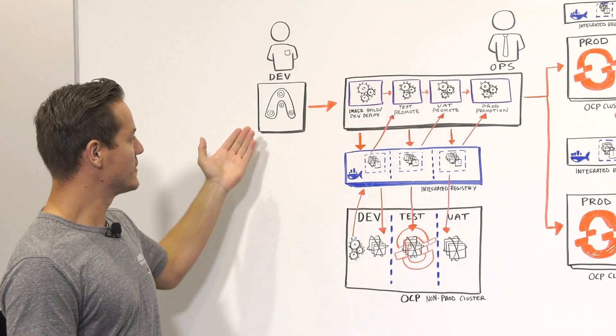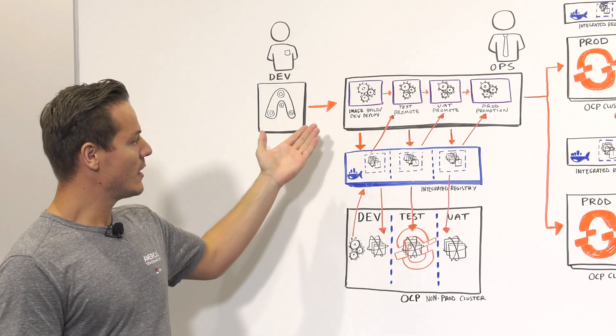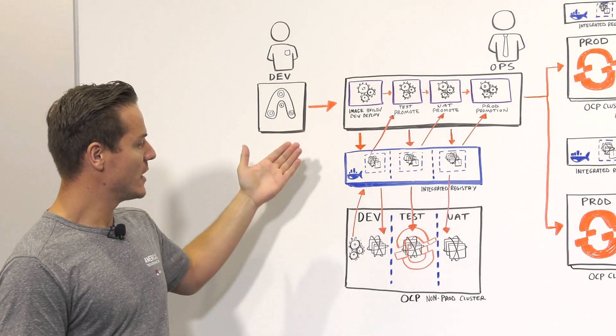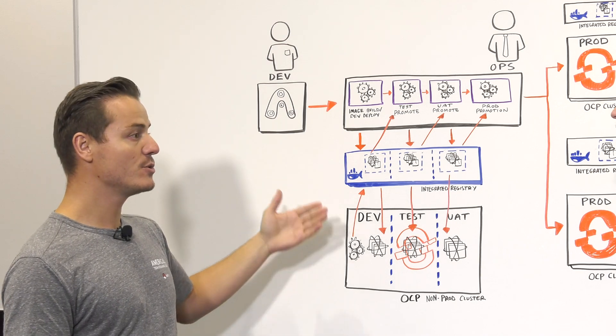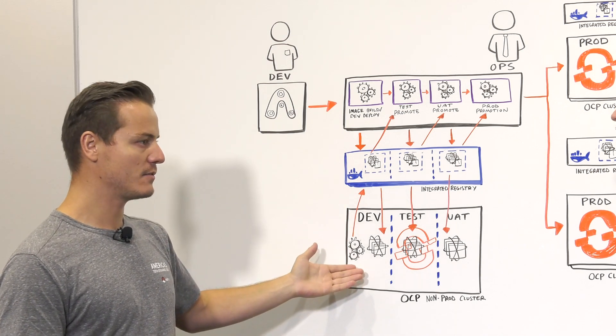What does this look like in a pipeline? A developer commits their code. An image is built from that code. It is tagged in that image stream with a specific name. And then that application, using that image, is deployed in our Dev project.